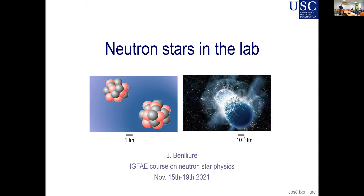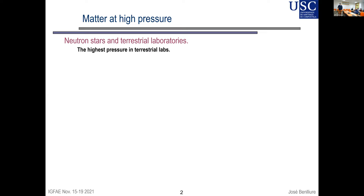I will try to give you a landscape of what is being done using accelerator physics here on Earth to contribute to the understanding of the internal structure of neutron stars. As experimentalists, one of the most relevant degrees of freedom to understand neutron stars is density. So the first question is: how do we produce very large pressures or matter at large densities? Which is the highest pressure we can produce in a terrestrial lab on macroscopic matter?